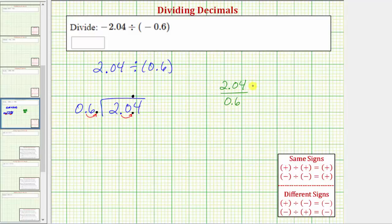So if we multiply the numerator and denominator by 10, we would have 2.04 times 10, which is 20.4, and 0.6 times 10 is 6. So this shows that 2.04 divided by 0.6, which was the original quotient, is equal to 20.4 divided by 6, which is the quotient after moving the decimal points.